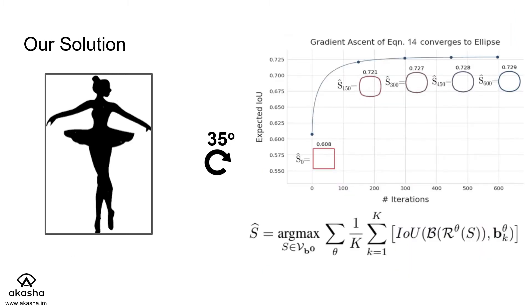To do so, we use a differentiable shape approximation and gradient descent to optimize over expected IOU. We show that this actually converges to an ellipse, and so we adopt the ellipse prior.